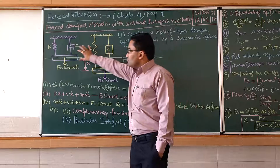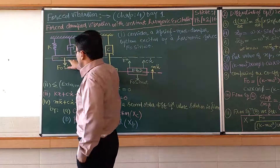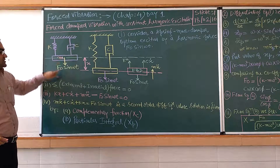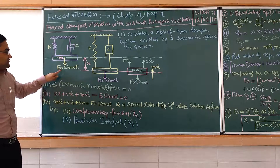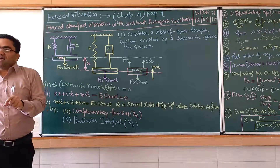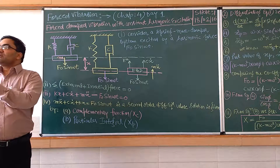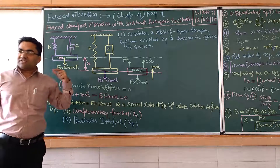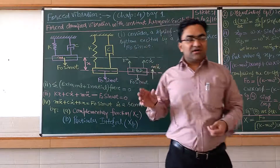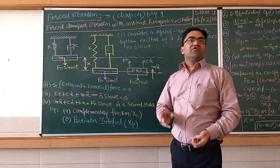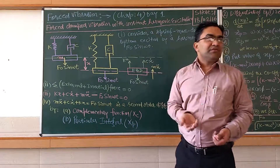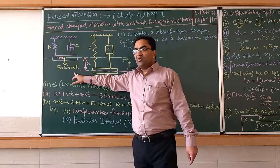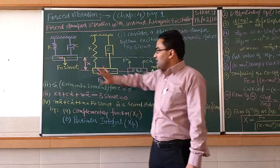In this chapter, we consider the spring-mass-damper system: this is the spring, this is the mass, and this is the damper. A force comes into the picture — this force is F₀ sin(ωt). Since sin(ωt) is attached to that, this is a harmonic force, meaning it follows a particular pattern at a particular interval. We will be discussing a harmonic force; two types of forces may be applicable — harmonic or non-harmonic. In this chapter, we will be analyzing the effect of the harmonic force only on the vibratory system.